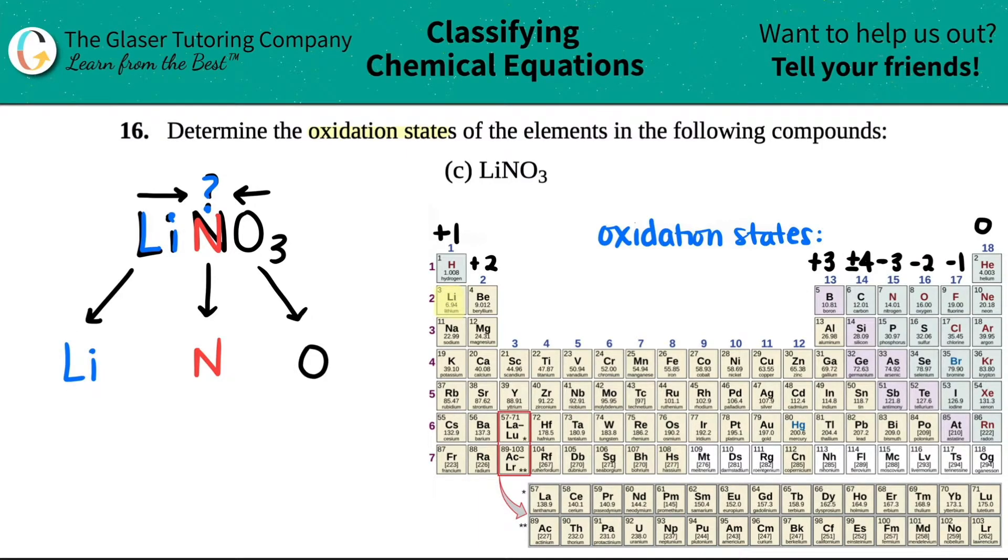So just know that I basically have three different elements. I have lithium, and maybe we'll color code this. I have lithium, I have nitrogen, and I have oxygen. Remember, if we're doing this algebraically, we only should have one unknown that we don't know. We can only solve for an X.